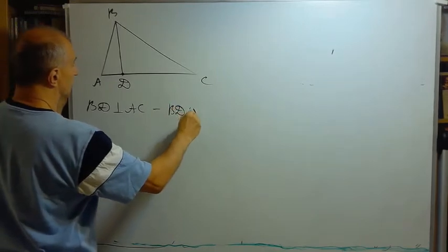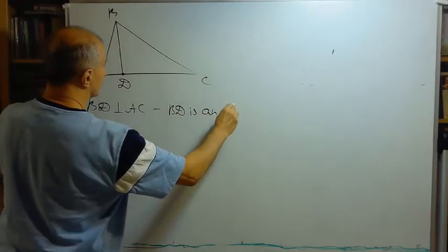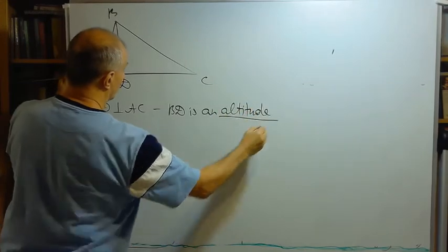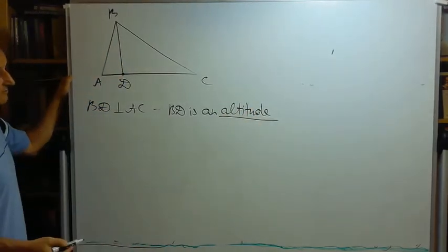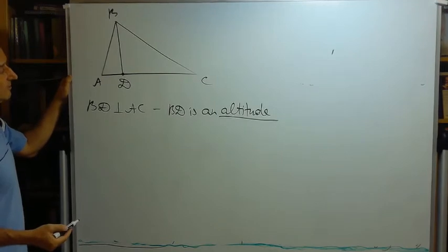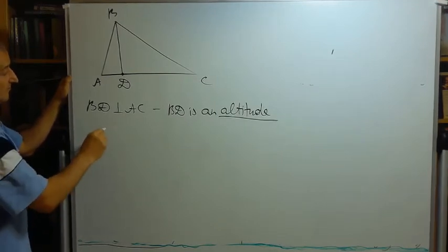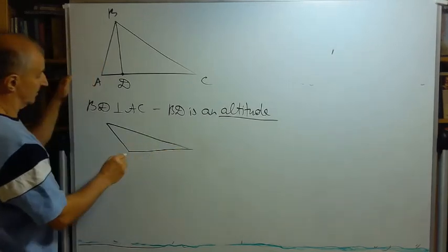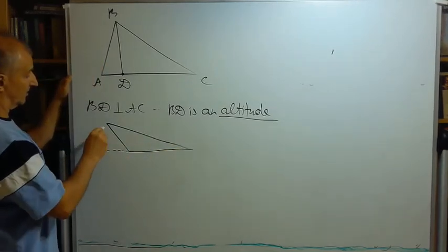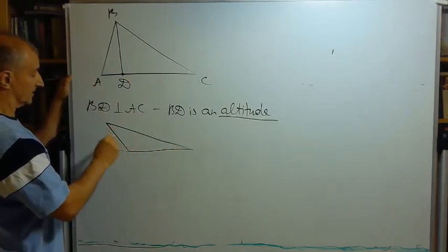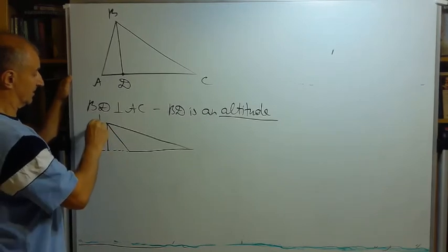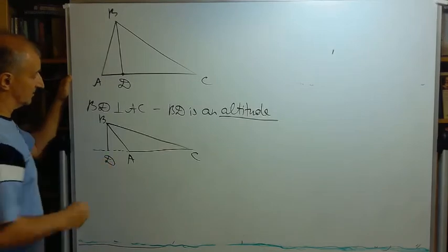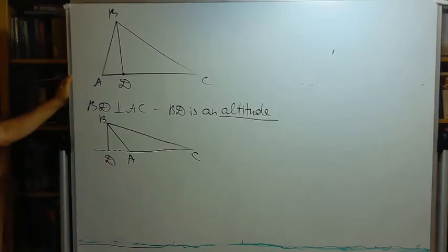How many altitudes can we draw in a triangle? Of course, we can draw three, from every vertex. In some cases, you draw an altitude, it may fall not on the side but on the extension of this side. So it will be B, A, C, and BD is still an altitude. Nothing is wrong with this.